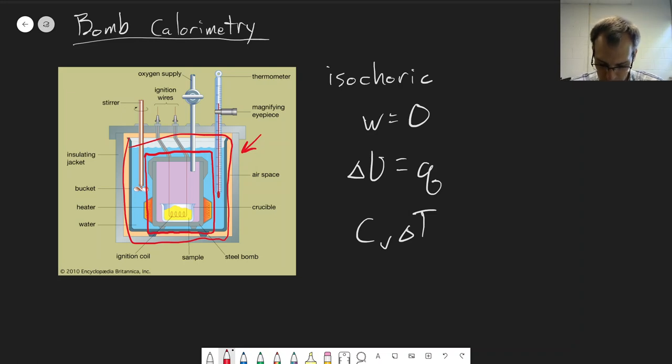We put in our reaction, and we have a set of ignition wires. We send an electrical pulse to start the reaction, and then we're measuring the temperature change. The main measurement we make is with this thermometer here. We're looking for this delta T, which lets us figure out how much heat is produced by the reaction.